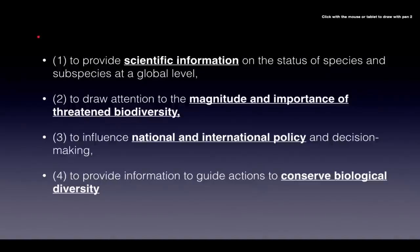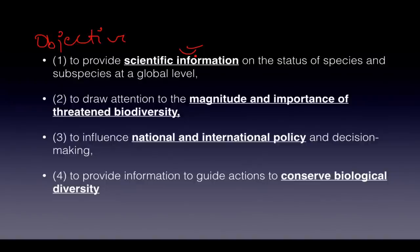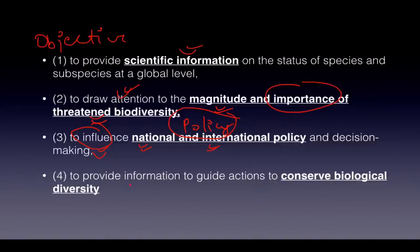The four main objectives of the Red Data List are: first, it provides scientific information on all data related to species — their population, habitat, reproduction, etc.; second, it draws attention to the magnitude and importance of threatened biodiversity through graphs and statistics; third, it lobbies decision-making parties at both national and international levels; and fourth, it provides information to help conserve biological diversity.